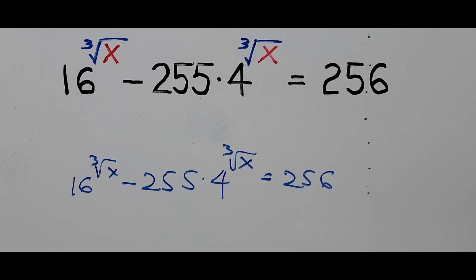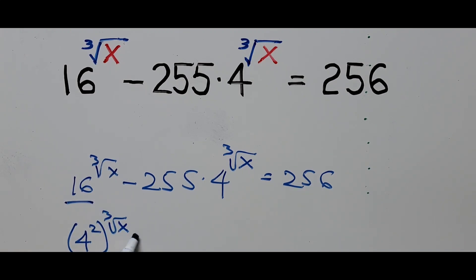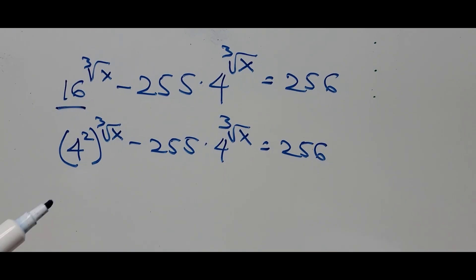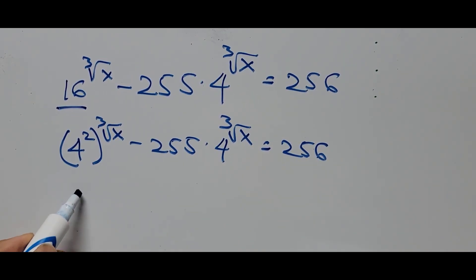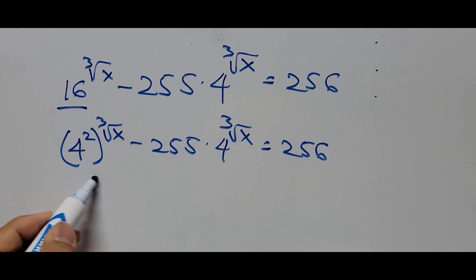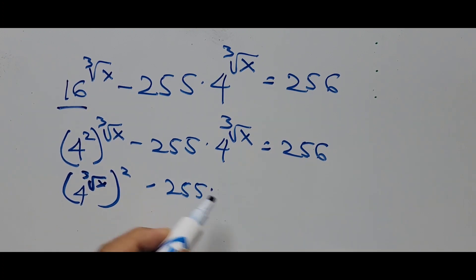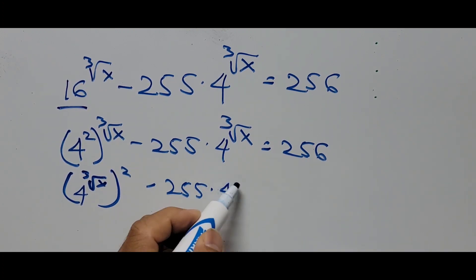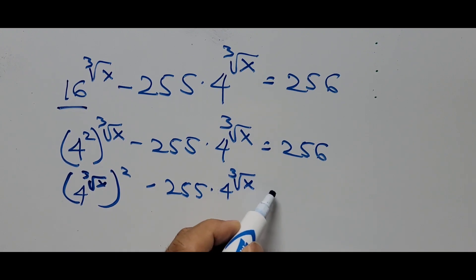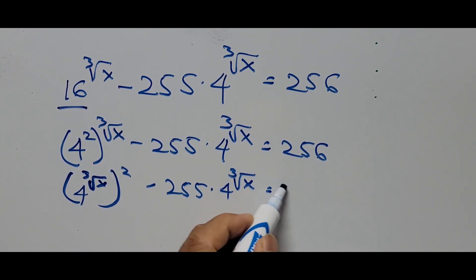Now our first focus is on the first term. 16 can be written the same way as 4 squared, that is 4 squared raised to the cube root of x, minus 255 times 4 raised to the cube root of x, equals 256. And the first term can be written the same way as 4 raised to the cube root of x, squared, minus 255 times 4 raised to the cube root of x, equals 256.